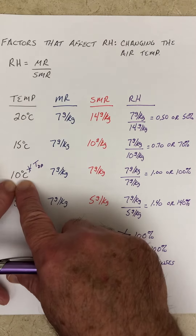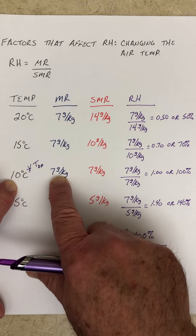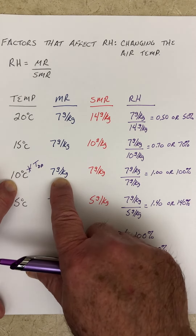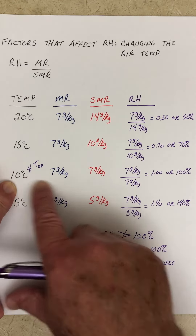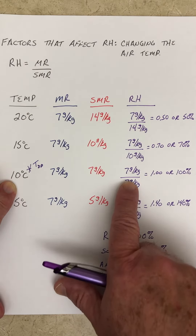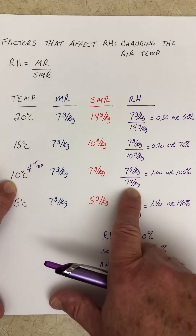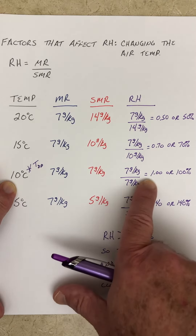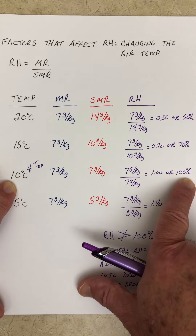Now we decrease the temperature down to 10 degrees C. The mixing ratio is 7 grams per kilogram, and the saturation mixing ratio based on temperature is also 7 grams per kilogram. Therefore the relative humidity is 7 grams per kilogram divided by 7 grams per kilogram — mixing ratio divided by saturation mixing ratio — equals 100 percent. There we go, there's our dew point temperature.